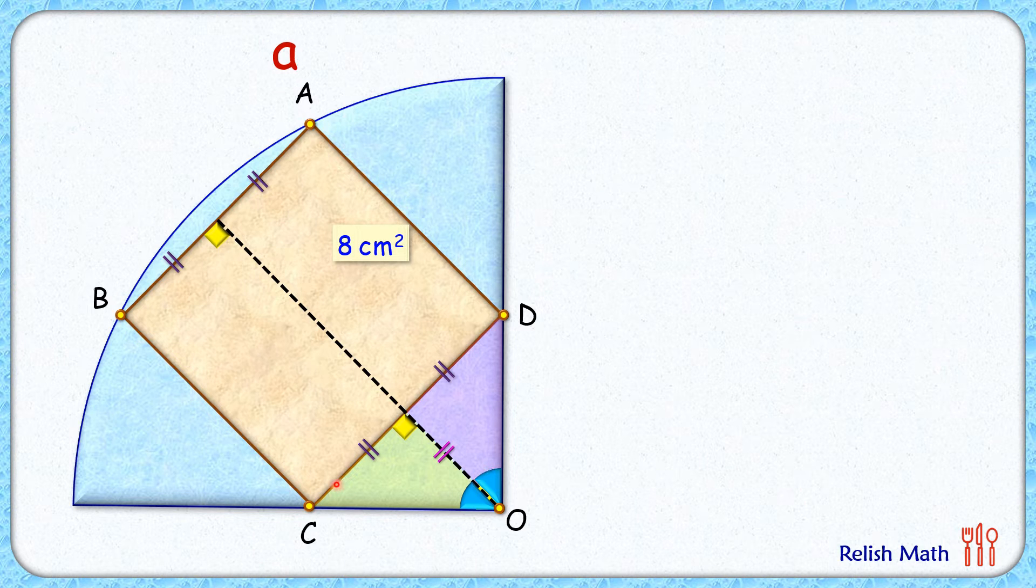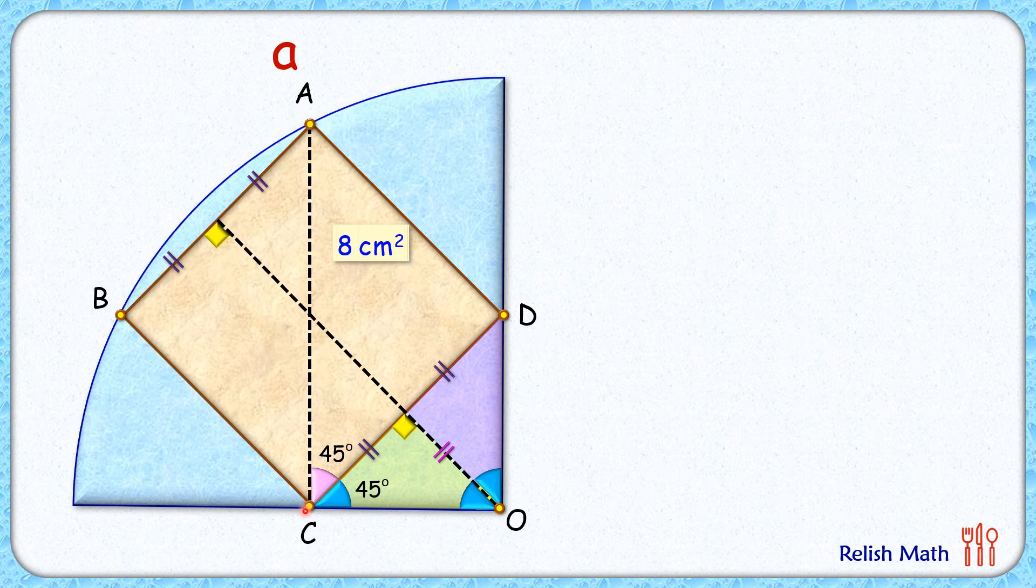Thus this angle here will be 45 degrees. Now let's join AC. AC is the diagonal of the square and we know that the diagonal and the side, the angle between them is 45 degrees. So we can say here that ACO is a 90 degree angle, or AC is perpendicular to this side of the quadrant.